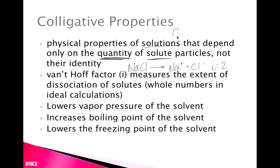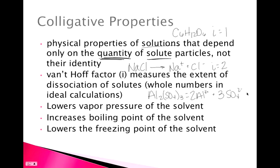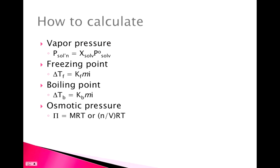Sugar (glucose) does not dissociate in water, so it has a van't Hoff factor of 1. Aluminum sulfate gives 2 aluminum ions and 3 sulfate ions, so a van't Hoff factor of 5. The colligative properties are: dissolving a solid solute into a solvent lowers vapor pressure, increases boiling point, and lowers freezing point — essentially keeping the solution locked in the liquid phase.